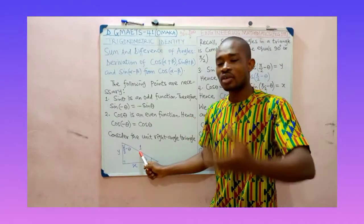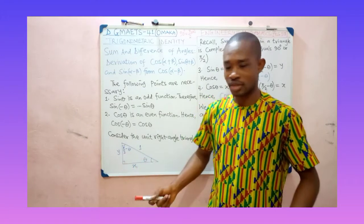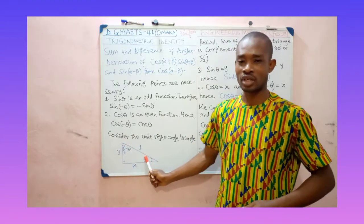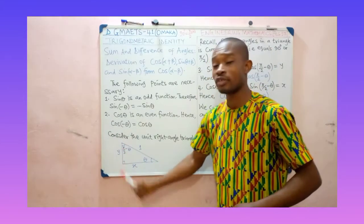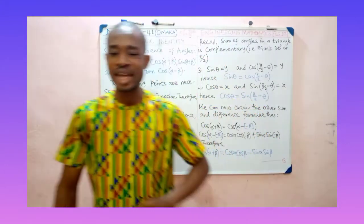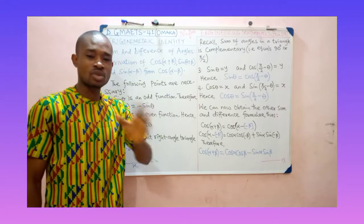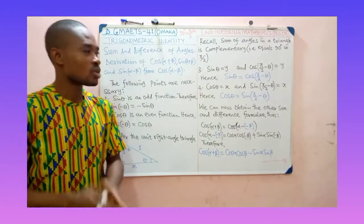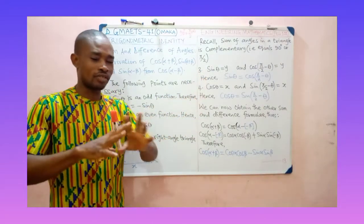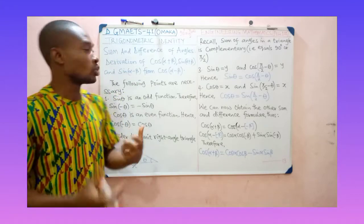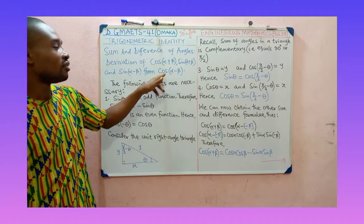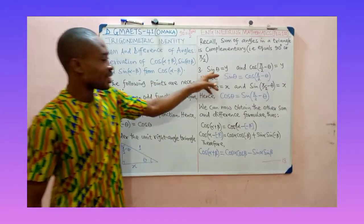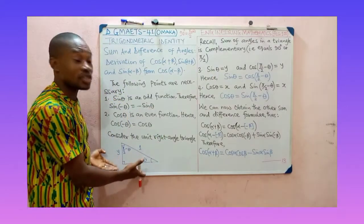If the sum of the two acute angles is complementary, equal to 90°, then one angle will be π/2 minus the other. Having explained that concept, we want to look at point number 3, which is very important before we work towards obtaining these identities from cos(α−β). Sin θ is equal to y — we already know that.